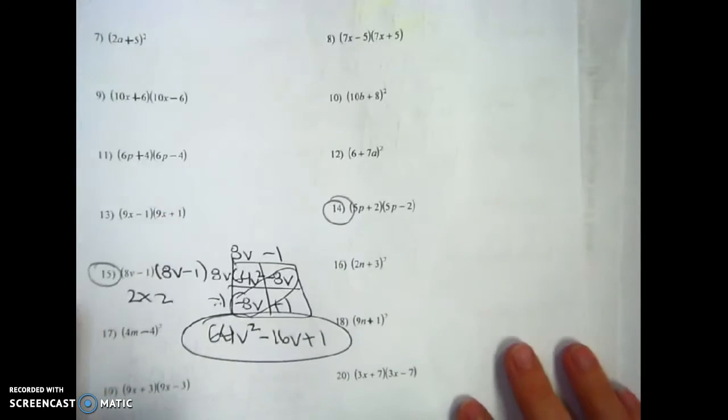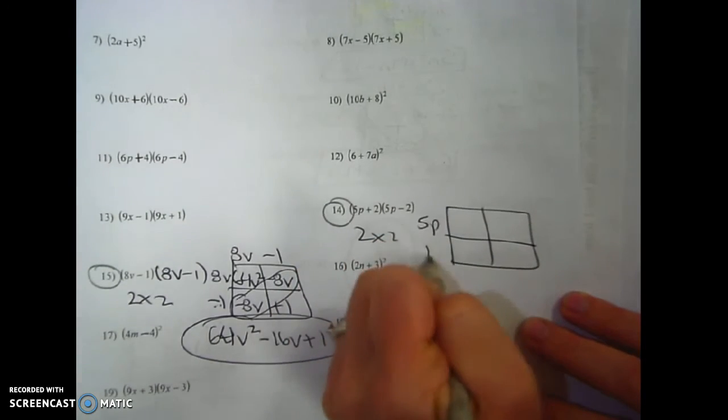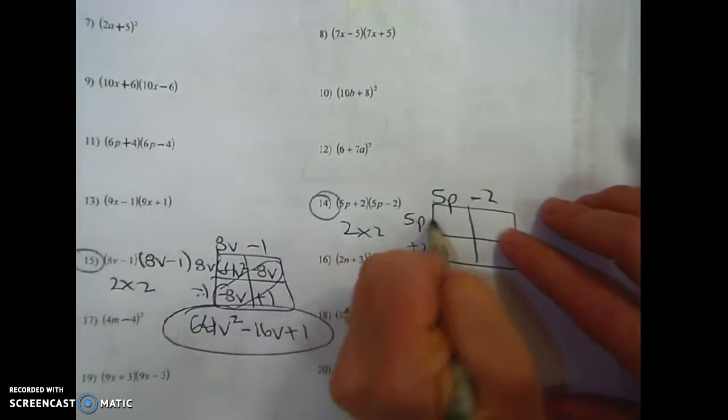Let's jump down to number 14. It's already, as I like it, a 2 by 2. 5p plus 2. 5p minus 2. 5 times 5, 25p squared.